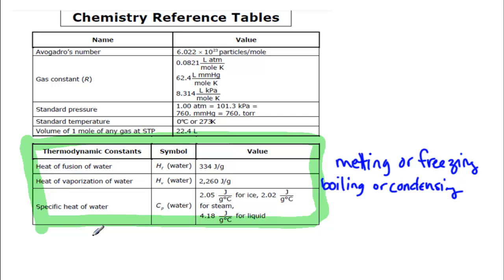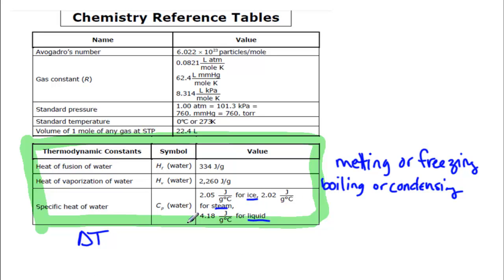Specific heat of water is going to be used when you have a change in temperature — increasing or decreasing temperature. Notice that there are different values: for ice (your solid), for steam it's 2.02, and for liquid, which is the most common, it's 4.18.